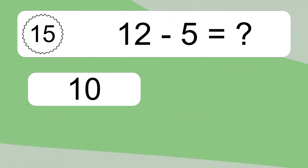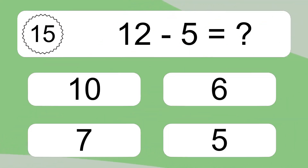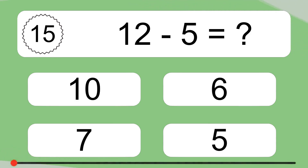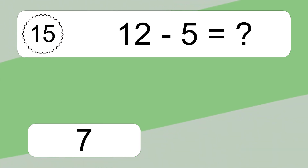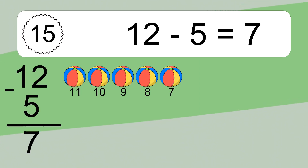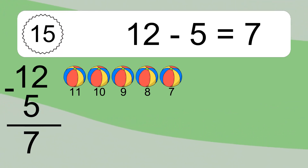12 minus 5 equals what? 12 minus 5 equals 7. Let's count it. 11, 10, 9, 8, 7.